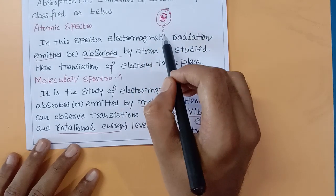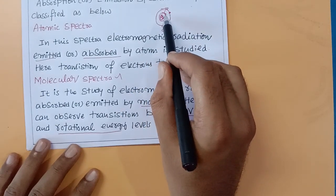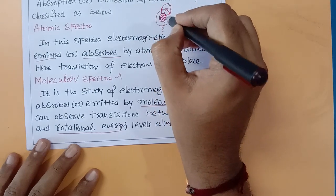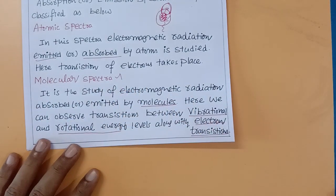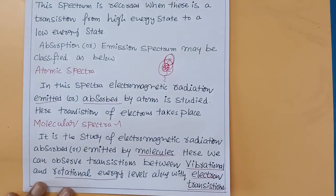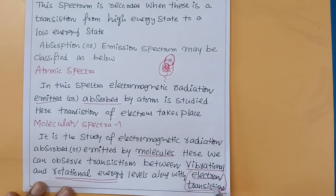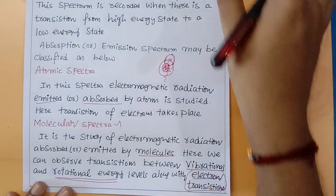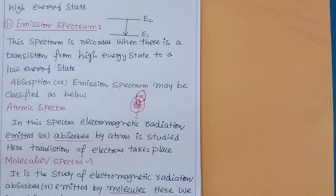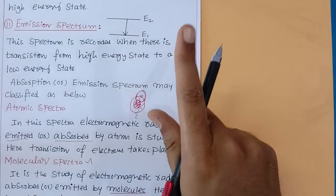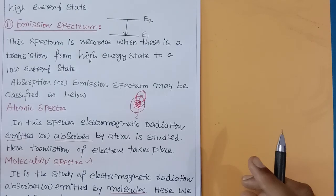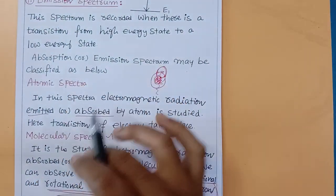In molecular spectra, we can observe transitions between vibrational and rotational states, as well as electron transitions. In atomic spectra, only electrons are excited when they react with electromagnetic radiation. In molecular spectroscopy, molecules may vibrate or rotate, and in some cases electrons within the molecule are also promoted from ground state to excited state. That is the difference between atomic spectra and molecular spectra.